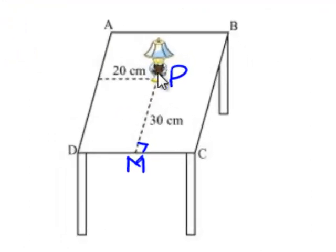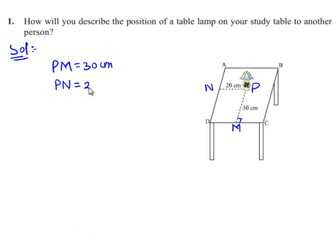Similarly draw a perpendicular PN from the point P to the left edge AD of the table ABCD. So PN will be equal to 20 cm.